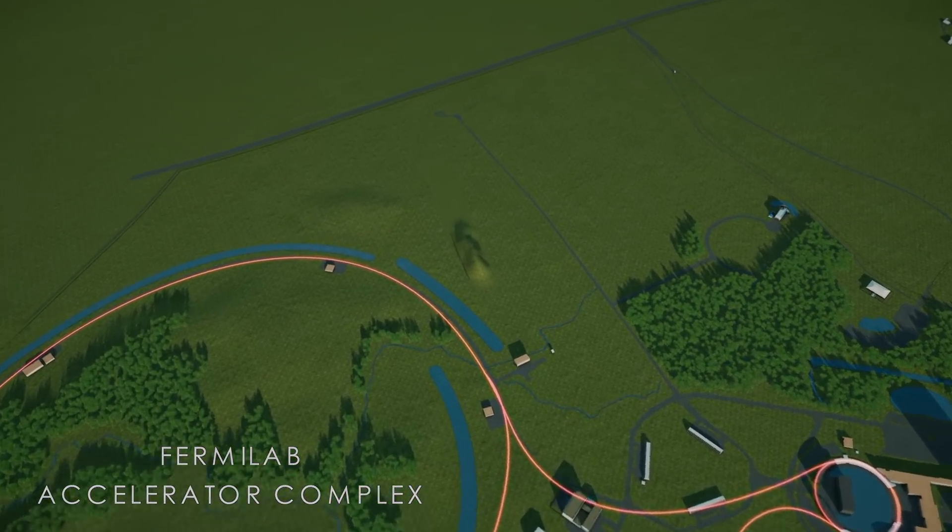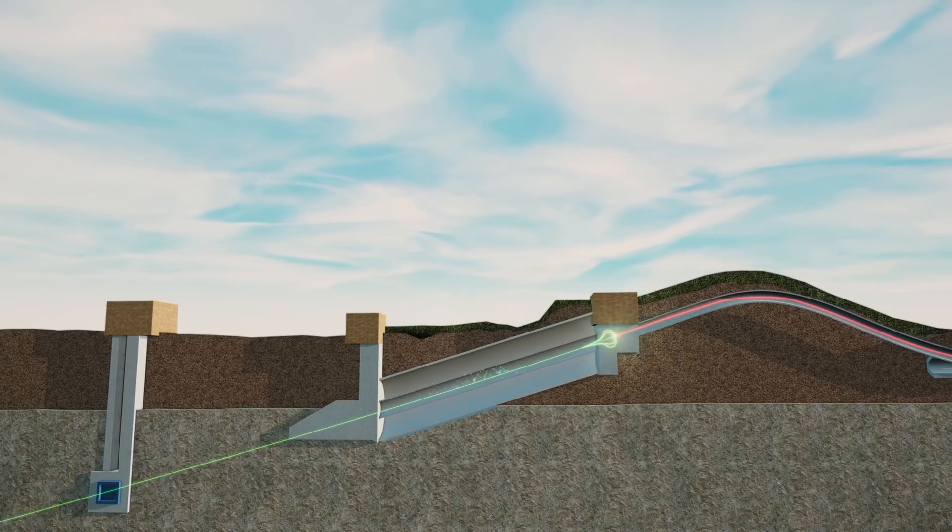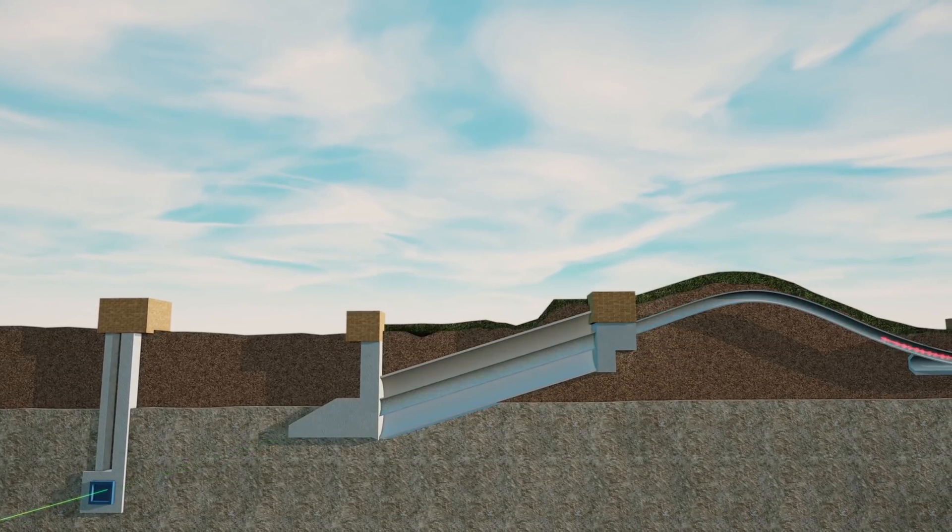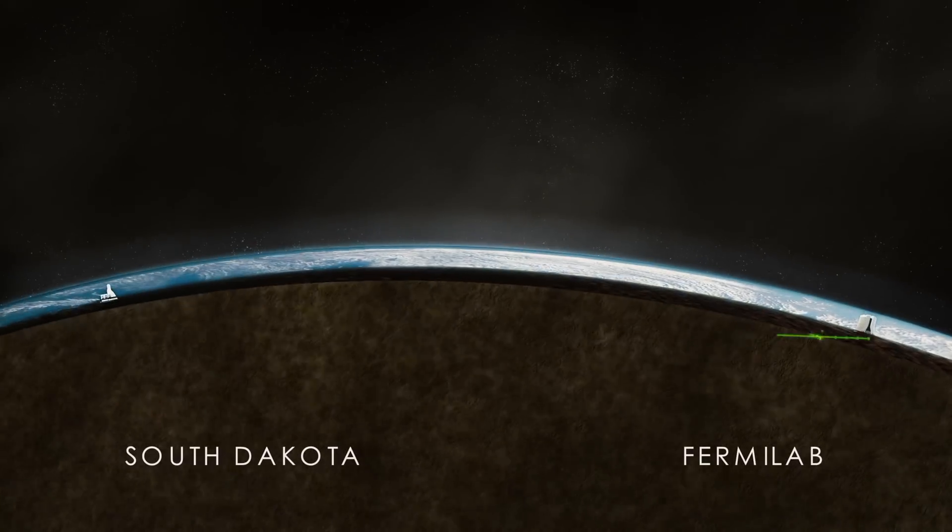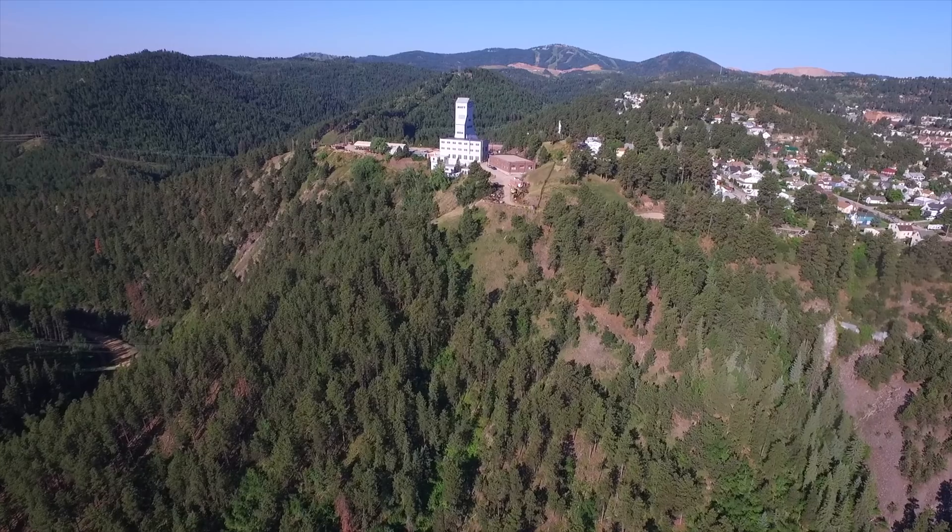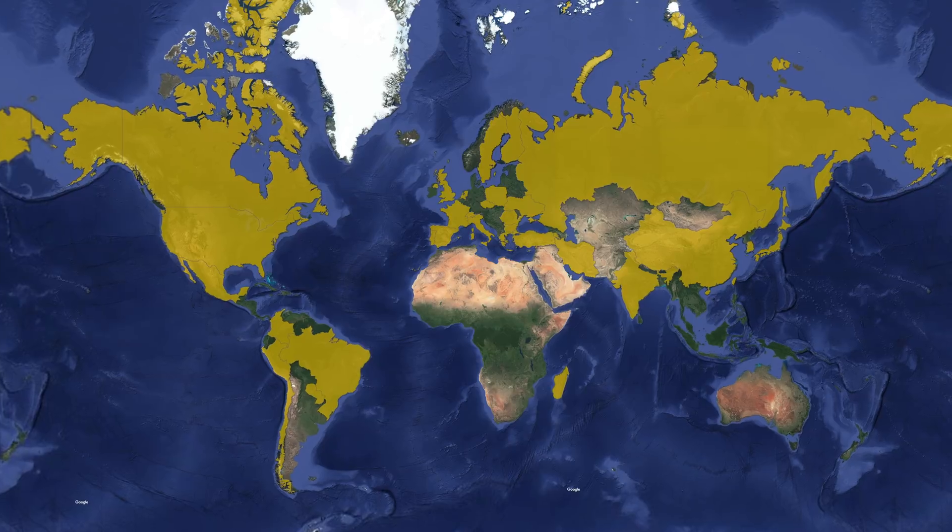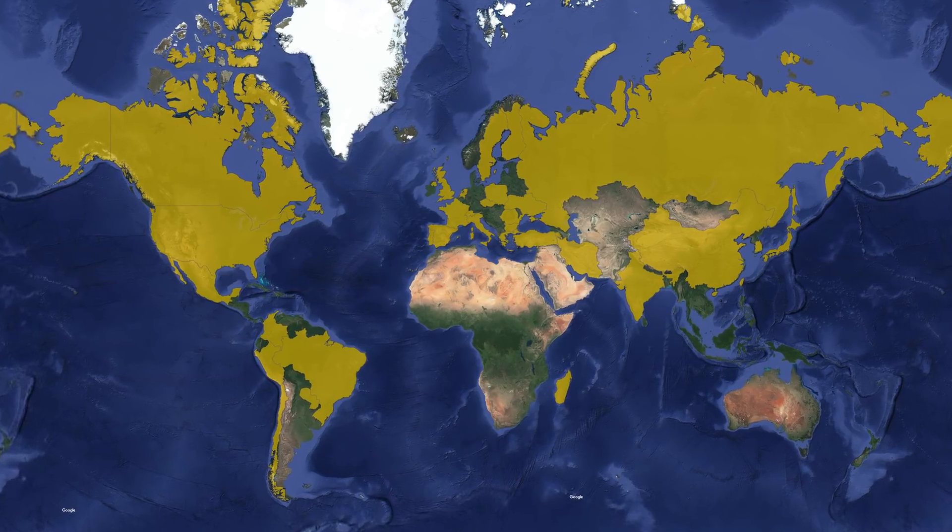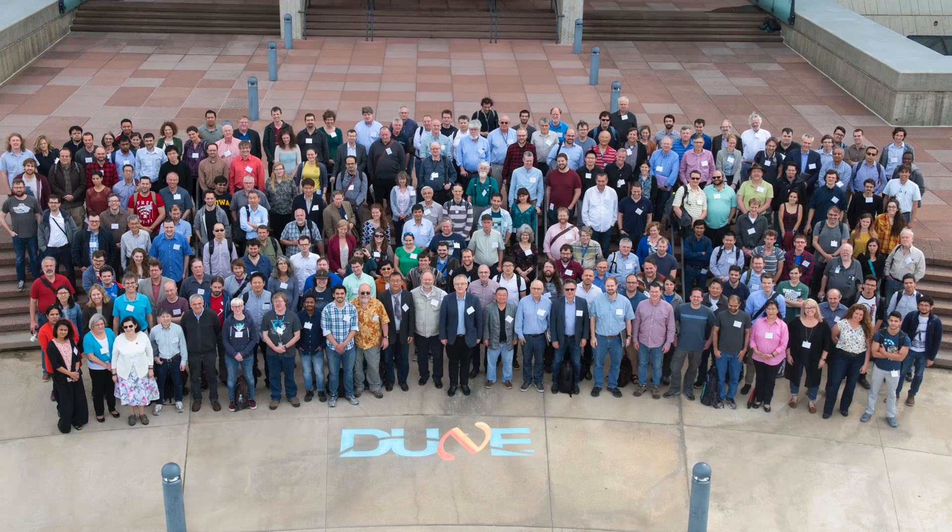However, the future will be an enormous experiment called DUNE, short for Deep Underground Neutrino Experiment. In this experiment, Fermilab will shoot a beam of neutrinos from Illinois through the Earth to South Dakota at a huge detector located deep underground in the former Homestake Gold Mine in the town of Lead. This experiment is truly international, attracting over a thousand researchers from dozens of countries across the globe.